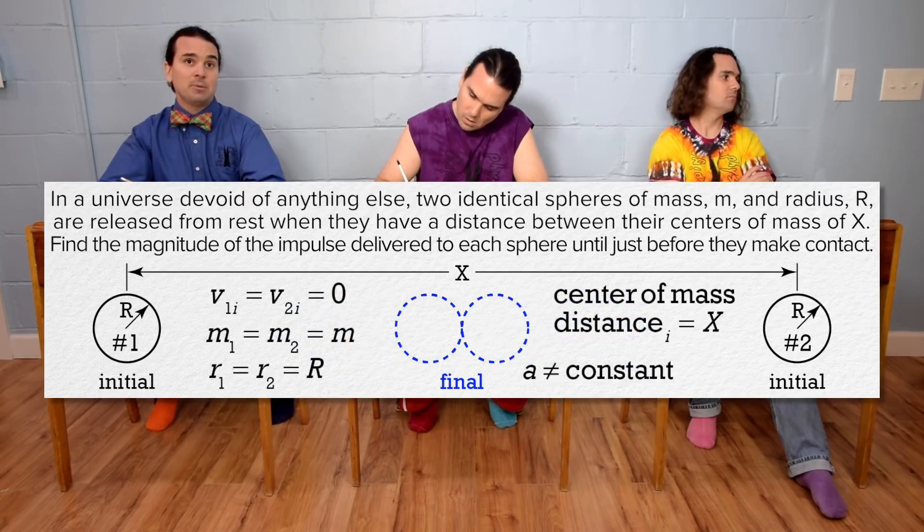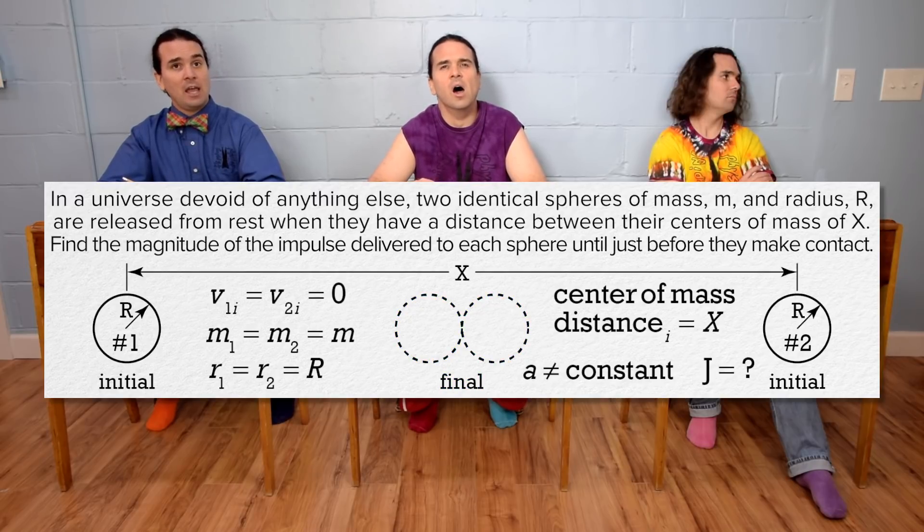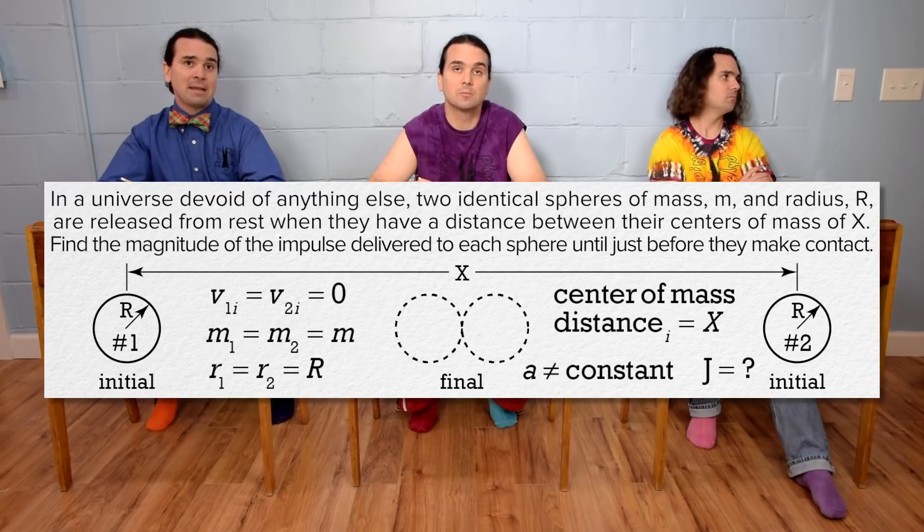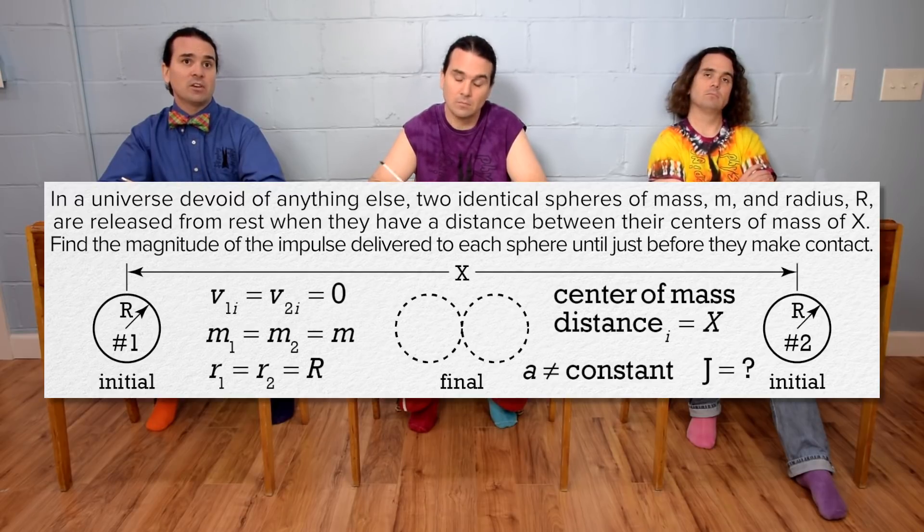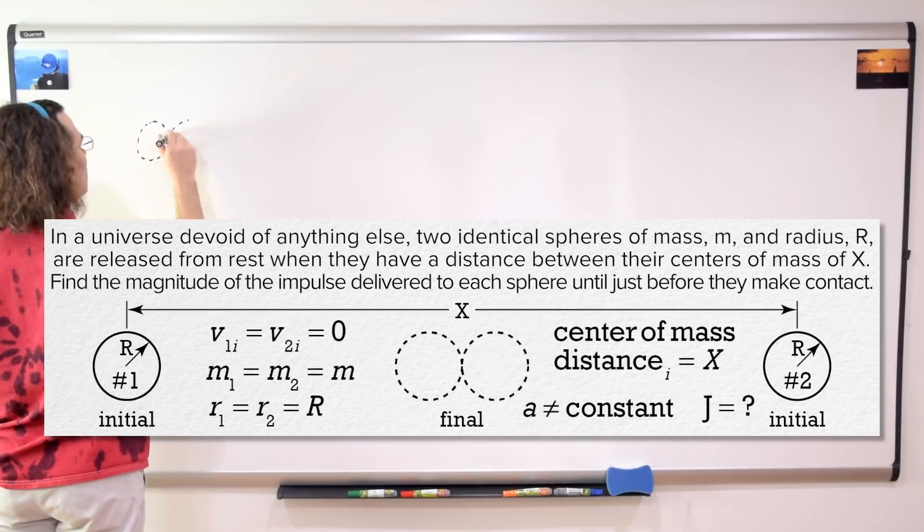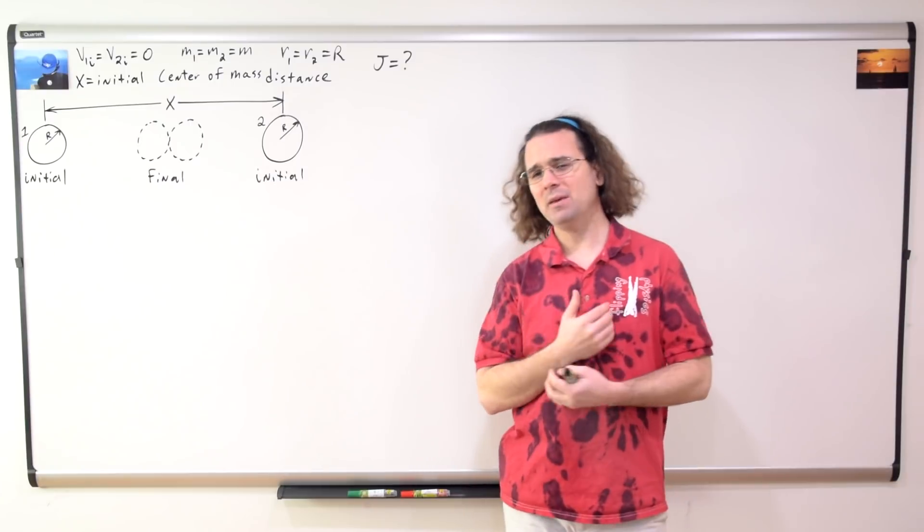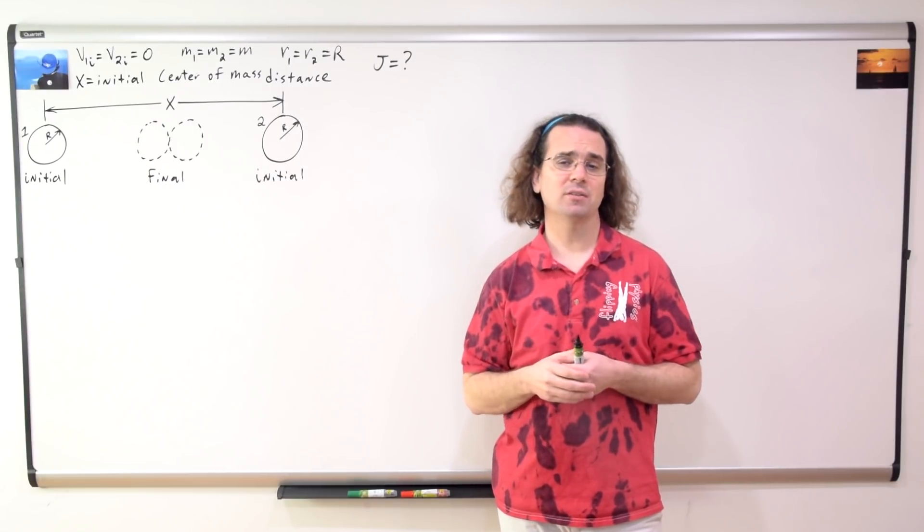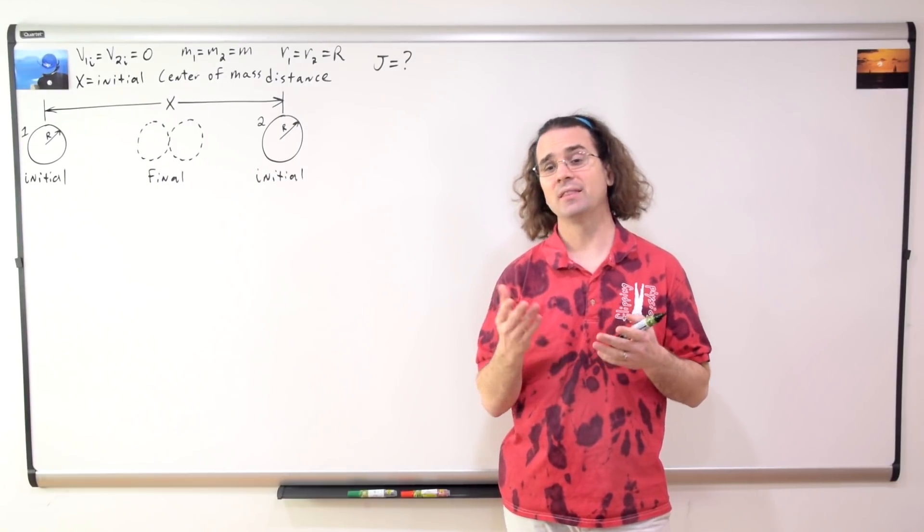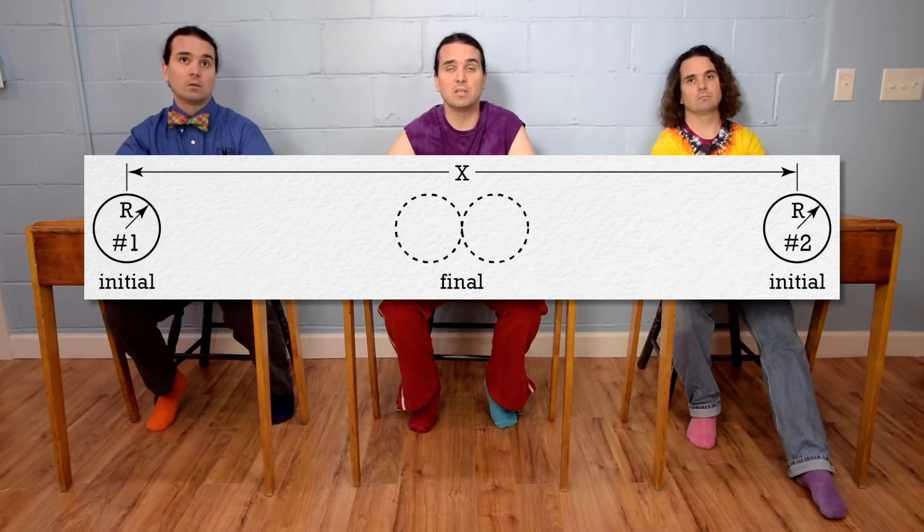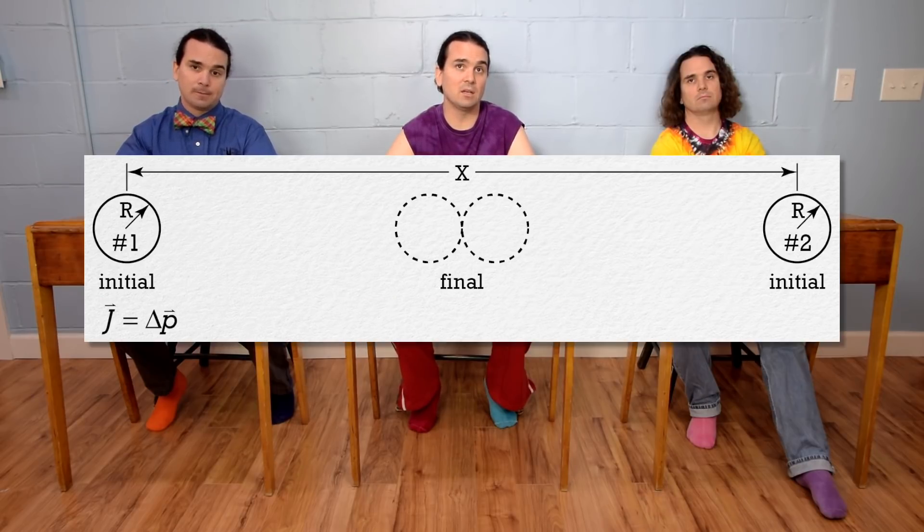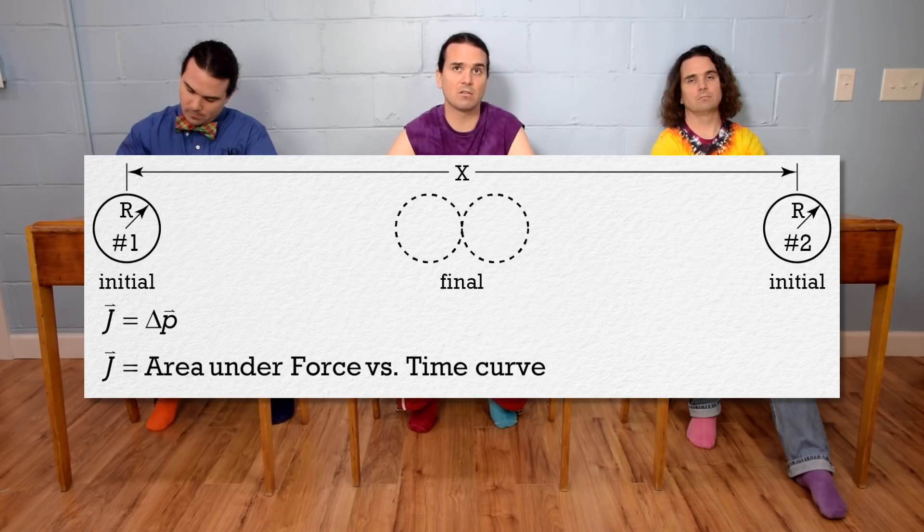The final position is right before the two spheres run into one another. Impulse or capital J equals question mark, because we are solving for the magnitude of the impulse delivered to each sphere during this event. Bobby, what are the equations for impulse and which one do you think we should use in this problem?